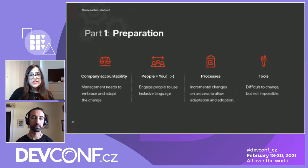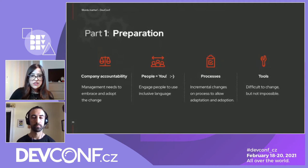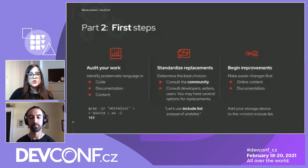Then comes the assessment phase. Audit the work you have to do — identify the harmful language in documentation and content, including websites, internal procedures, and communication. You can use a simple grep command to identify occurrences of harmful language in your sources. Then determine what words will replace the harmful language, ensuring consistency. Consult with your community and developers to understand the most appropriate replacement. Once you have agreement, document it and make everyone aware of the terms agreed upon.